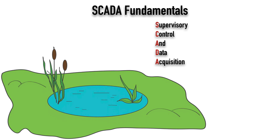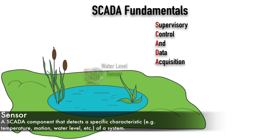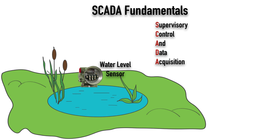A SCADA component that we need to add is a sensor. Here I'm adding a water level sensor — it's going to detect how deep the pond is and whether the water level is rising. Depending on what system you're monitoring, you could have a variety of sensors: maybe it's a temperature sensor, maybe it's a current sensor sensing current flowing through an electrical cable, or maybe it's a motion sensor. Here we've got a water level sensor.